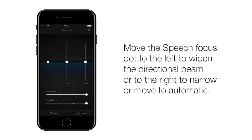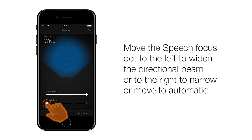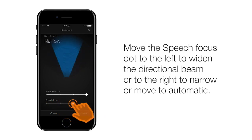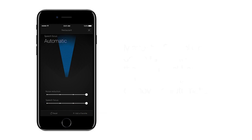Move the speech focus dot to the left to widen the directional beam, or to the right to narrow, or move to automatic. Sliding all the way to the left — the base, middle, and treble dots disappear — wide. Slides to the right one notch to medium, one more to the right: narrow, then all the way to the right: automatic.